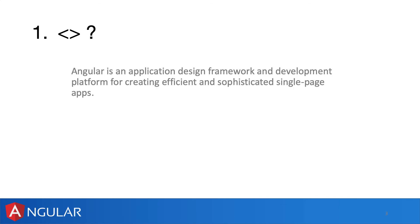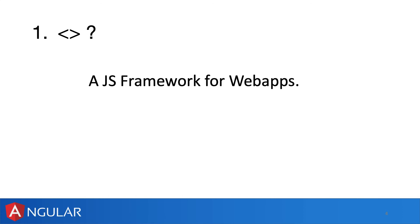When you look at the formal definition of Angular, this is what you find on the Angular docs: Angular is an application design framework and development platform for creating efficient and sophisticated single page apps — the SPAs that we talked about last time. That's the formal definition, but you'll probably forget it after one or two months. So you could just remember this line: it's a JavaScript framework for web apps. And that's it.